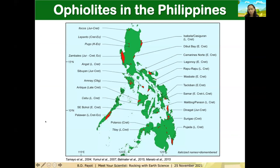We don't have to go all the way to Oman to study ophiolites, because here in the Philippines we have a lot of them. If you look at this map showing ophiolites in the Philippines, everything shown in red would be rocks comprising ophiolites. So if we want to understand how these rocks are formed, the Philippines would be a very good laboratory to do this kind of work.